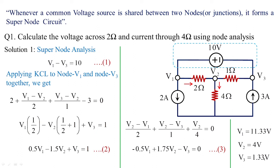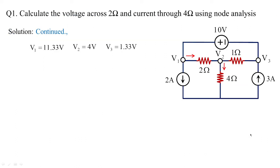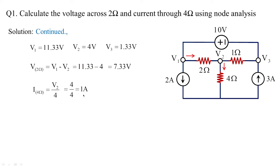Have we done with the problem? No, because we need to calculate the voltage across 2 ohms and the current in 4 ohms. These are only the node voltages obtained using super node analysis. The voltage across 2 ohms is V1 minus V2 = 11.33 minus 4 = 7.33 volts. Since the arrow mark is in this direction, that is why it is V1 minus V2. Current in 4 ohms: V2/4 gives the value as 1 amp. This is how we solve the problem using super node analysis when 10 volts is shared between node 1 and node 3.